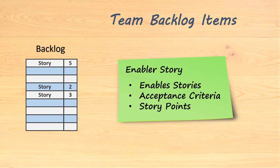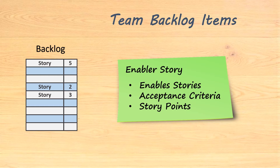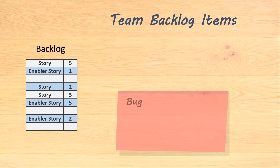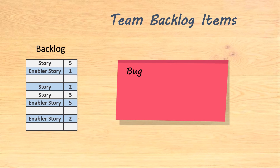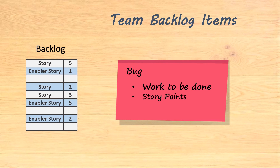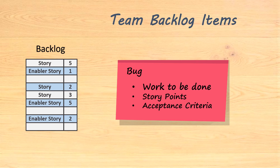Since the enabler story is not part of the standard set of items from Jira, you will need to ask your administrator to create it. Death, taxes, and bugs are three certainties of life. Indeed, any team that wants to succeed while managing their backlog must include bugs. A bug, just like a story or an enabler story, represents work to be done to build the solution, regardless of when that will happen. Because of that, a bug should also be estimated in story points and planned in the exact same way as a story or an enabler story. The bug must also have acceptance criteria and has a reserved spot in the backlog. Like the story, this is a default element in Jira.